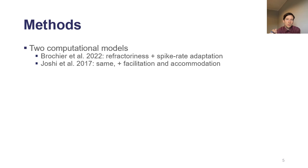We use two computational models of the auditory nerve. One that includes only refractoriness and spike rate adaptation from Brochie et al. 2022, and the second one that additionally includes facilitation and accommodation by Joshi et al. 2017.